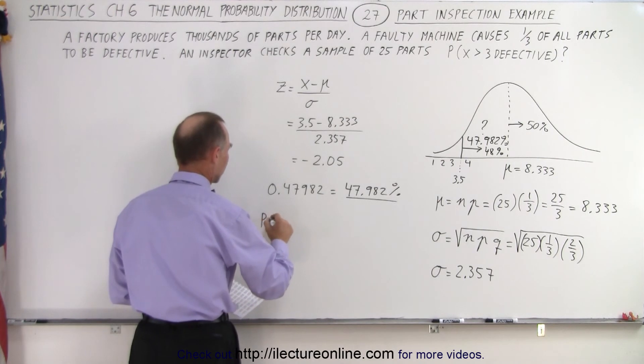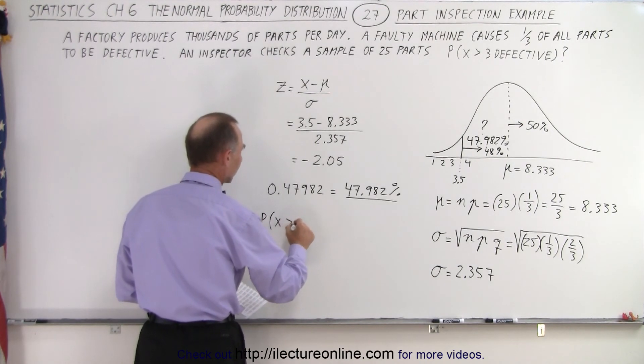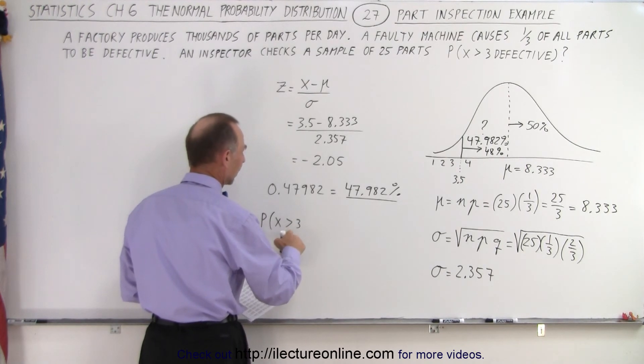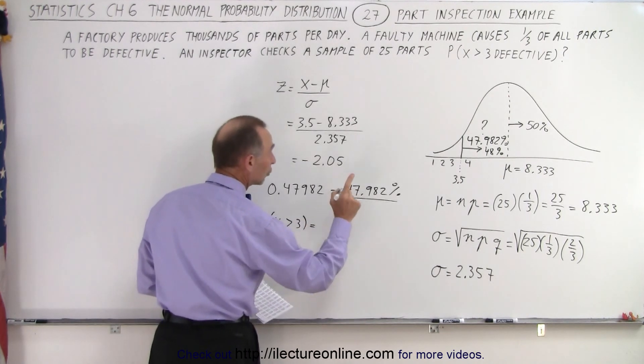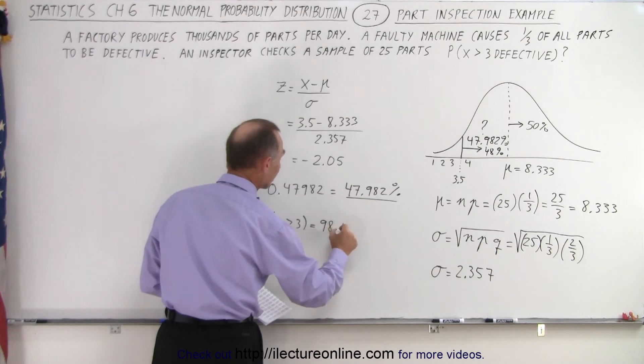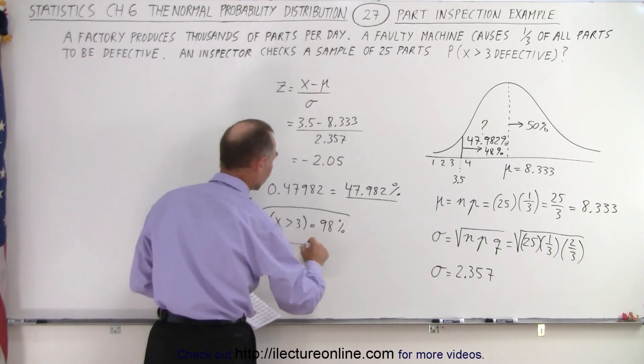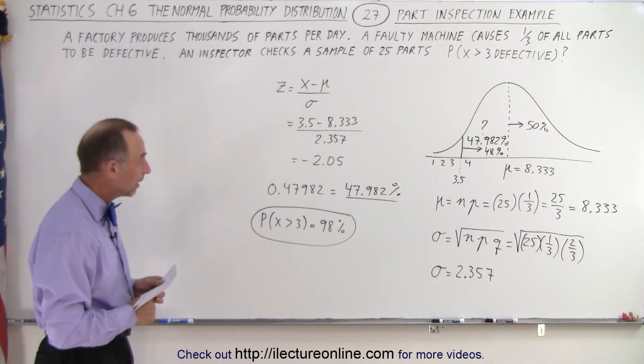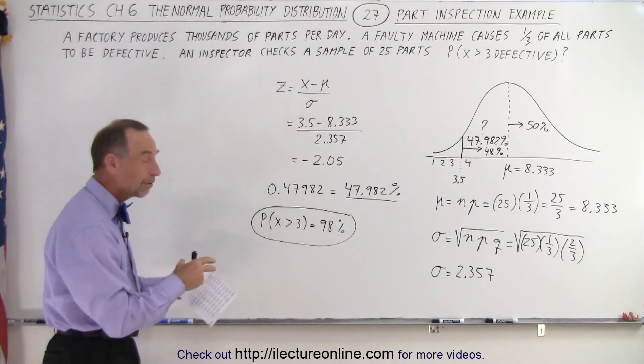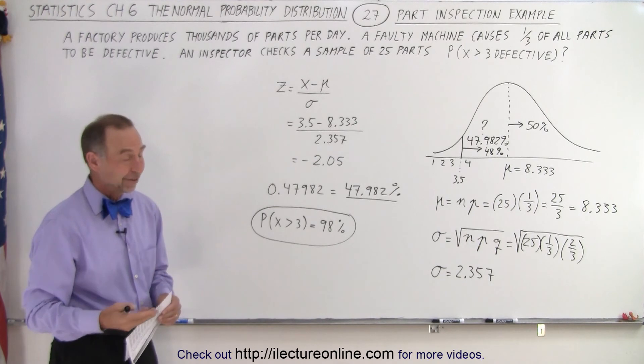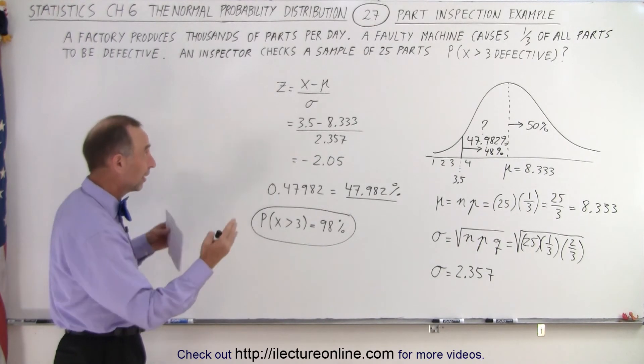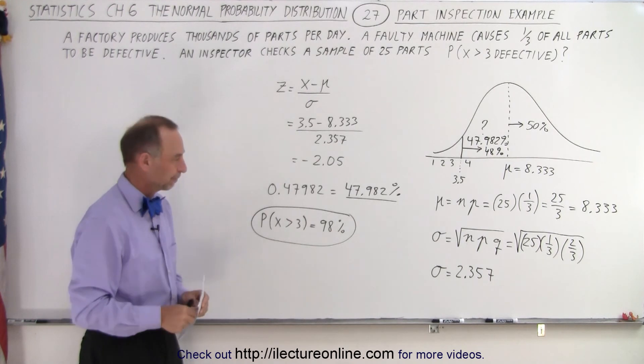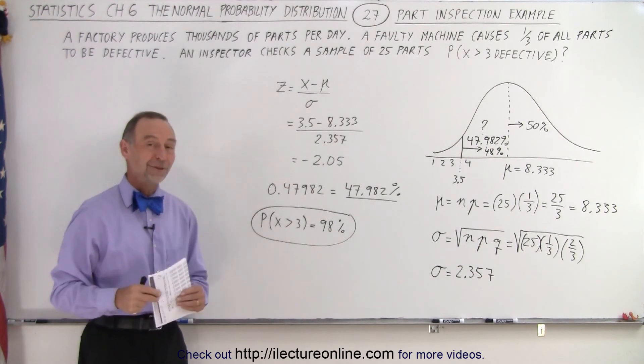So therefore, we can say that the probability of finding X being greater than 3, the probability that the number defective is greater than 3, is going to be equal to 50 plus 48, or 98%. So that means that the inspector has 98% probability that when he picks 25 parts, more than 3 of them will be defective. And if more than 3 out of 25 are defective, there's definitely something wrong with your manufacturing process. You need to go fix it. And that is how it's done.